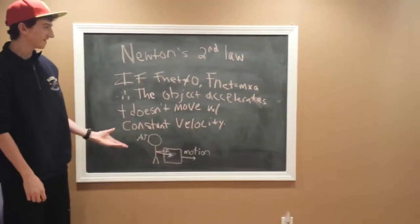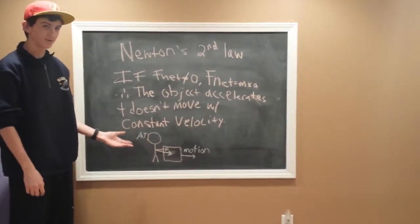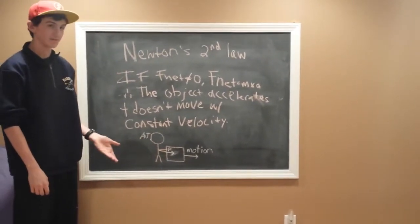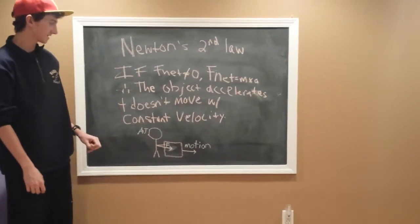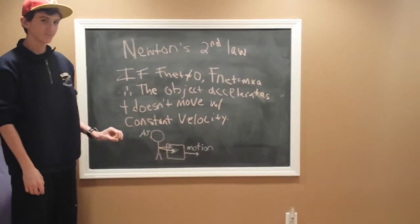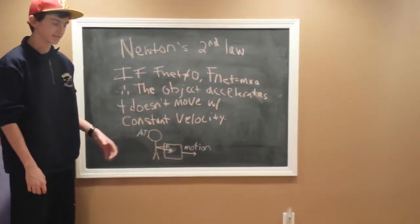Newton's second law: if F-net does not equal zero, you can find F-net by multiplying mass times acceleration. Therefore, the object accelerates and it does not move in a constant velocity and it is not at rest.